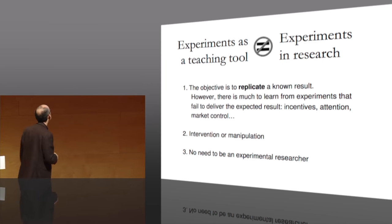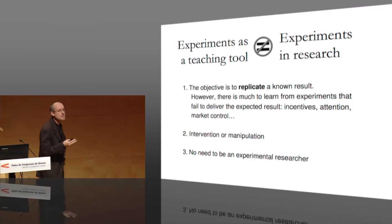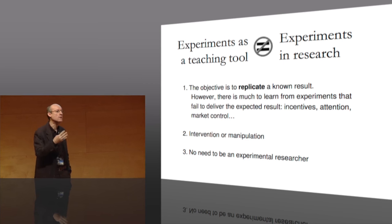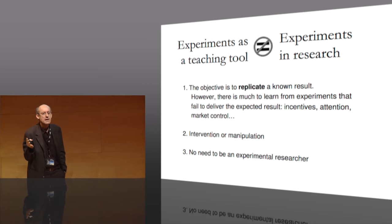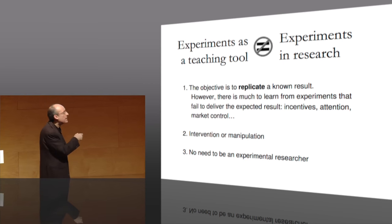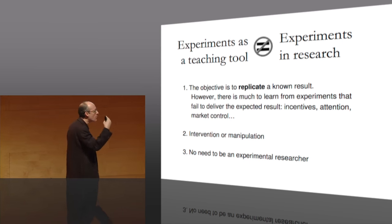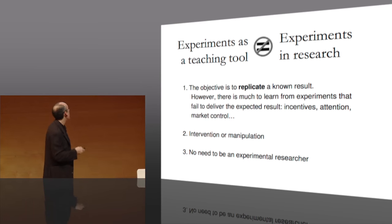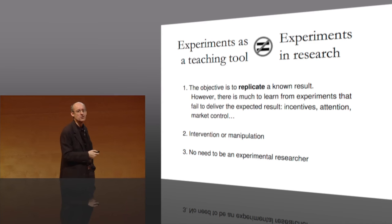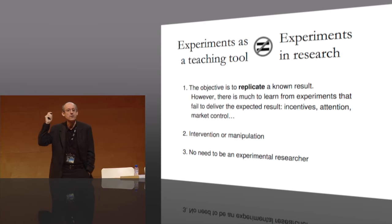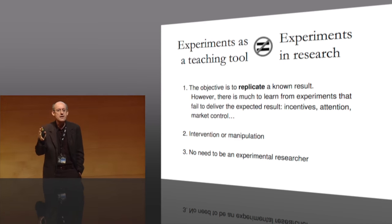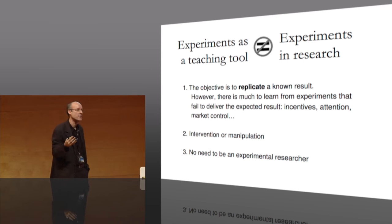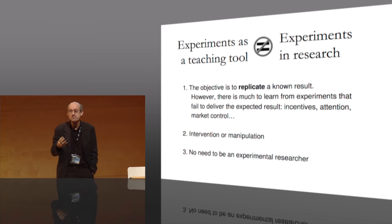The second thing is that it's okay to manipulate to a certain extent the rules of the experiment, because it's always a teaching tool — we want to show students how things work and help them understand the concepts. And third, most importantly, you don't need to be an experimental researcher. I'm not an experimental researcher myself. I've been doing experiments for teaching for a long time, and I think that's important because many people think, 'I've never done an experiment — how am I going to use experiments for teaching?' It's not necessary at all.